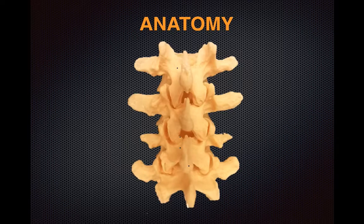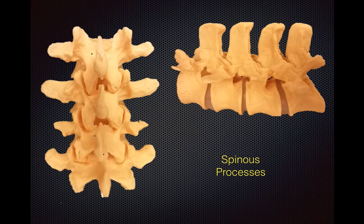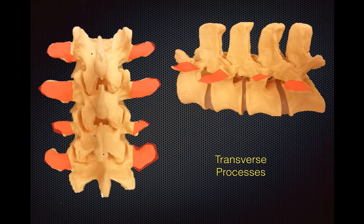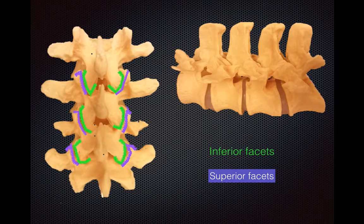Knowing the anatomy of the spine is half the battle, so I'm going to spend a little bit of time going over what we're looking at when we use ultrasound to image the spine. The first thing that we tend to identify or look for would be the spinous processes, shown in blue here. Other things that you might see on ultrasound would be the transverse processes, and then you have the inferior and the superior facets, shown in green and purple respectively.